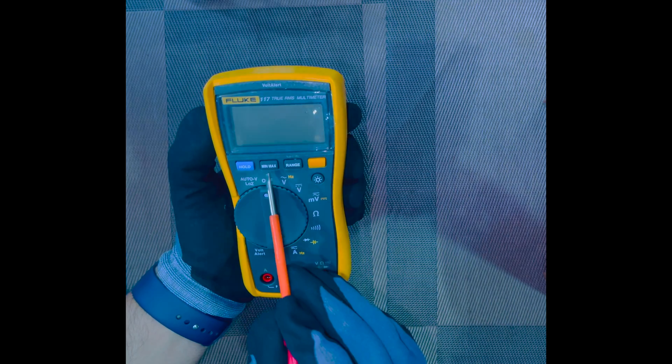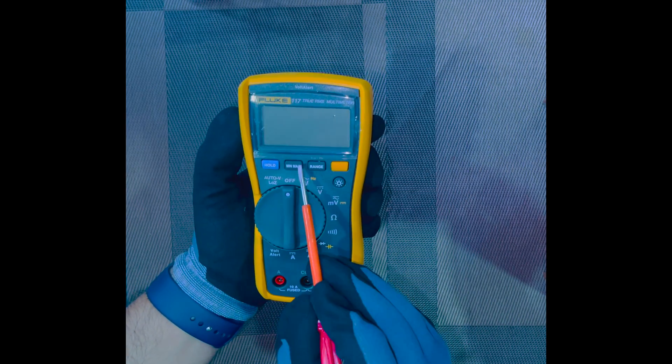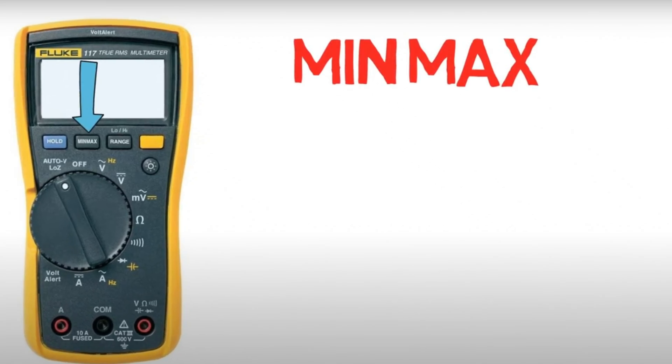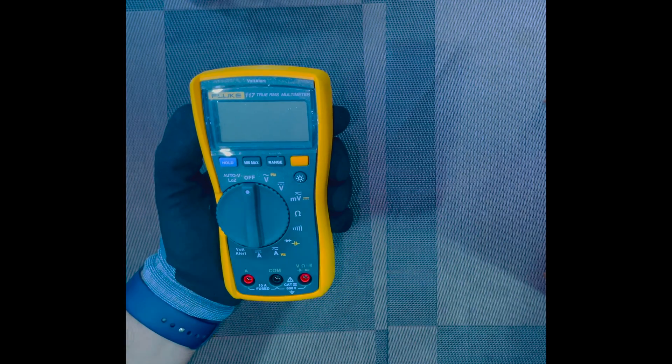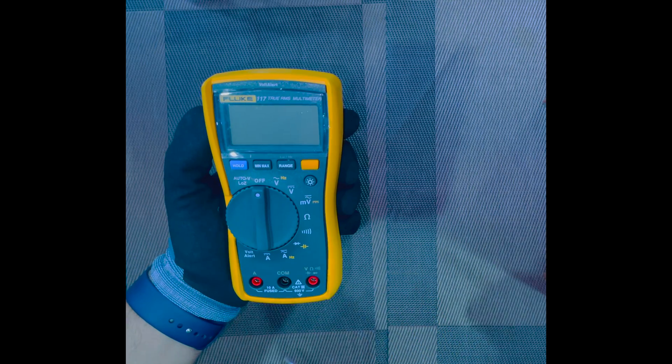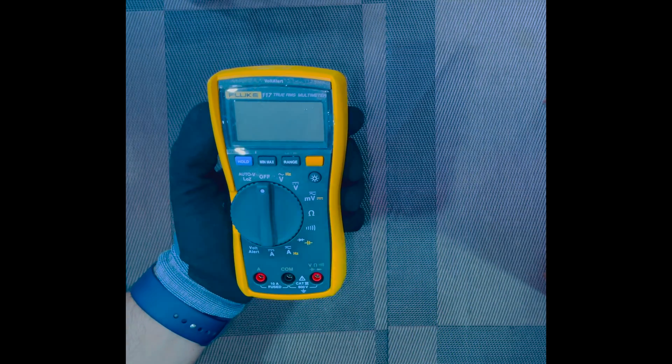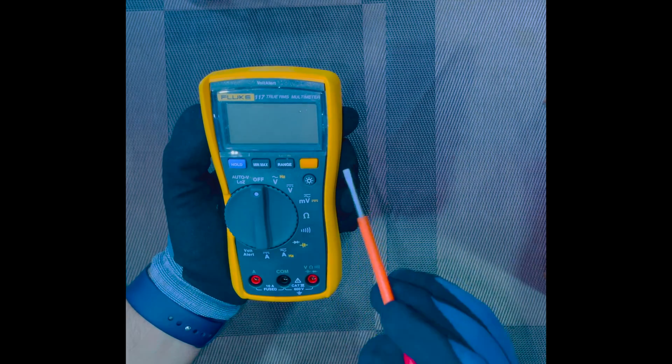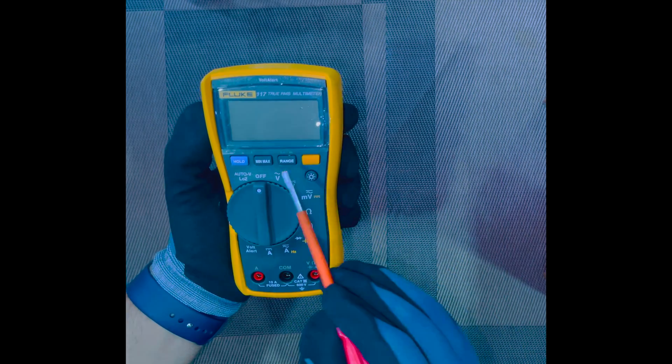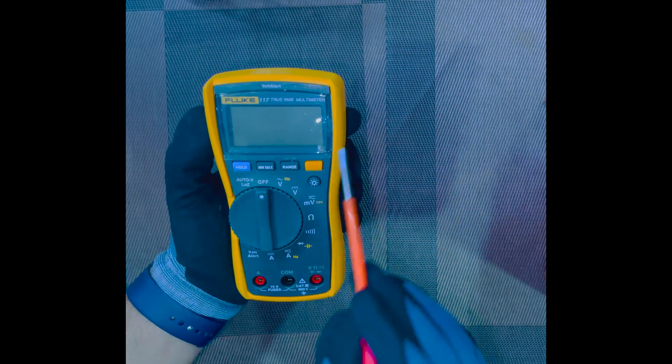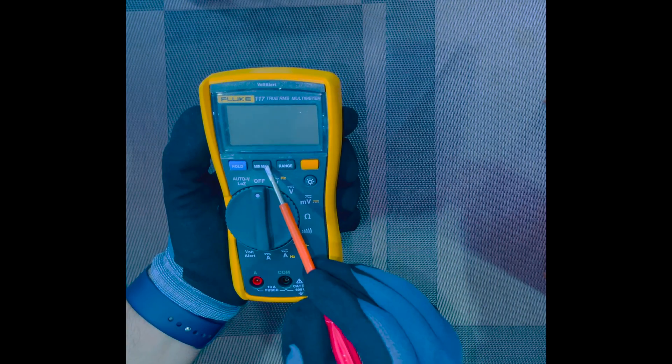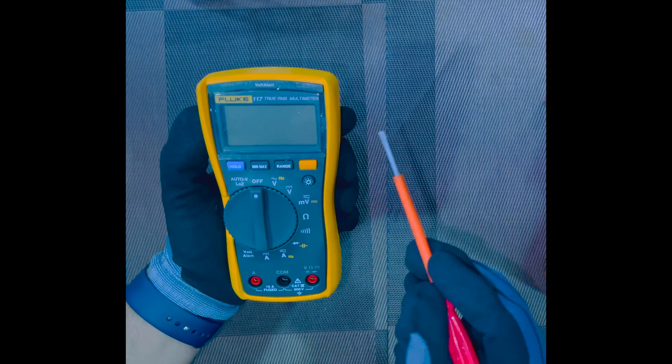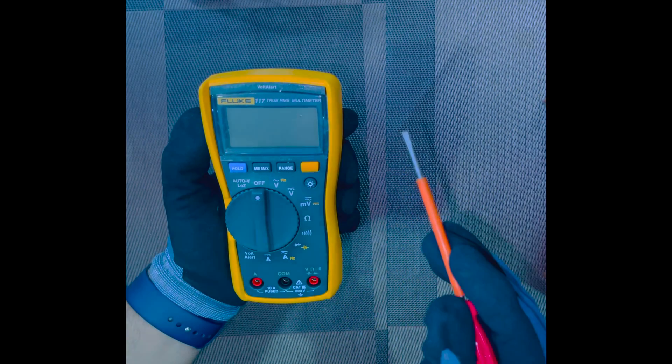The next button we have is the minimum/maximum button. This button allows us to enter a mode that will record the highest, the lowest, and the average readings we have recorded since we entered the mode. This will help you record the minimum, maximum, and average reading values for whichever mode we have selected.